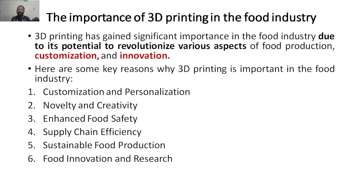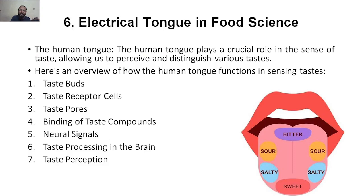Next is supply chain efficiency — to produce food we need to buy raw materials and there is a lot of processing involved, and 3D printing can improve supply chain efficiency. There are also applications in sustainable food production and food innovation and research — for example, mixing ingredients together and researching how the taste profile develops. The next topic of electrical turn in food safety will be discussed next.